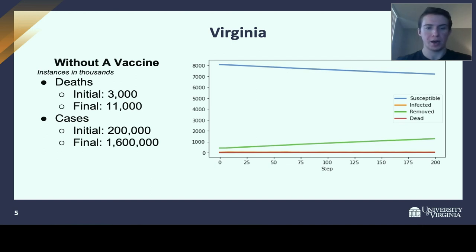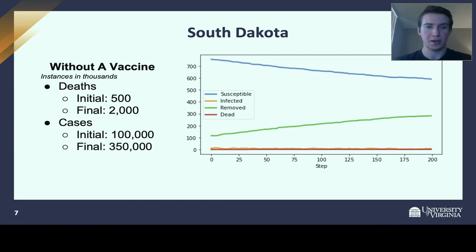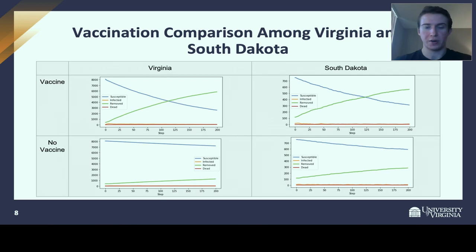The South Dakota results are a bit shakier due to its smaller population. Conclusions differ somewhat between South Dakota and Virginia, which is fascinating given they're in very different positions — South Dakota having a much higher proportion of its population already infected. Even assuming similar vaccine introduction timing, you still see about a one-third drop in mortality and between 40 and 60 percent reduction in overall caseload within the 200-day window. Herd immunity can be achieved just after 200 days, at which point the virus is mostly under control.